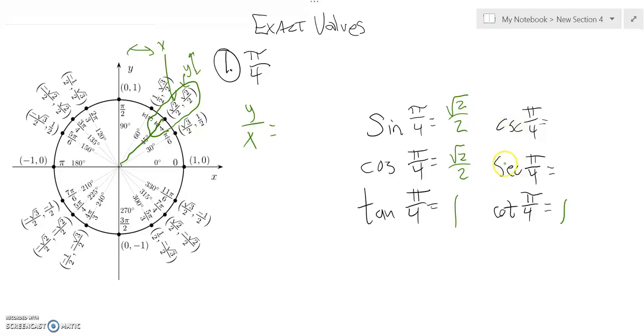Cosecant and secant will both be the same value, but they're the reciprocals of these. So if sine is root 2 over 2, its reciprocal is 2 over root 2. But I'm not supposed to leave radicals in the denominator. So I'll multiply by this version of 1, and then notice what happens is 2 times root 2 is 2 root 2. Root 2 times root 2 is the square root of 4, which is 2. That divides out, so that value is root 2.